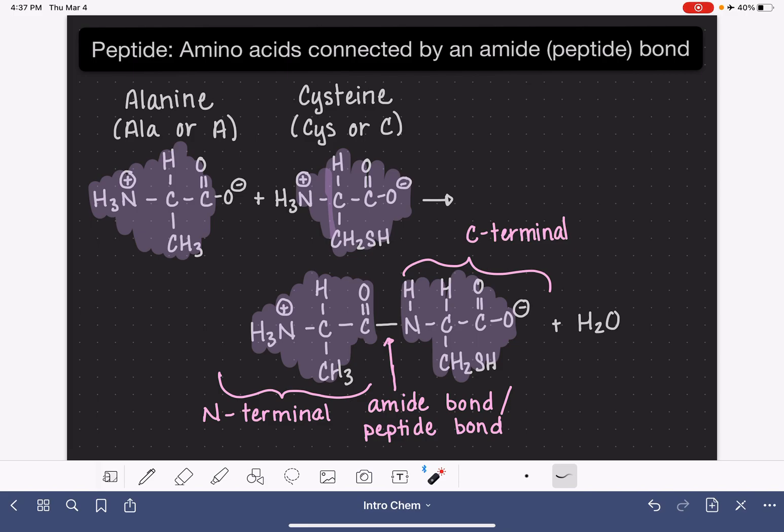The peptide can be named based on the amino acids making up the peptide in order from N-terminal to C-terminal—normally left to right as it's drawn. We name a peptide by using either the three-letter abbreviations or the one-letter abbreviation for the amino acids. We write them in order from N-terminal to C-terminal.